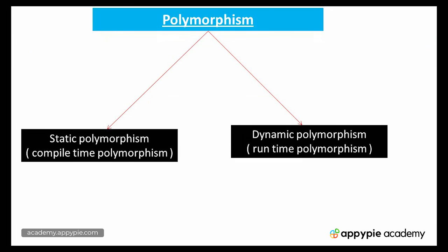When we start coding in Java, we will learn that Java supports two types of polymorphism. One is called static polymorphism, which is also called compile-time polymorphism. Another type is dynamic polymorphism, which is also called runtime polymorphism. Don't worry — we will be learning a lot about the practical aspects of polymorphism. This is just an introduction.